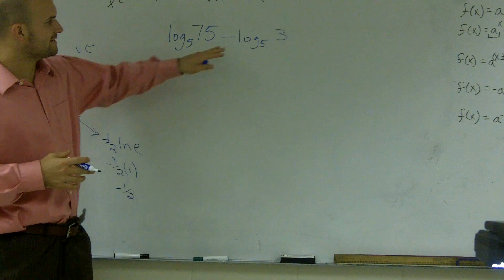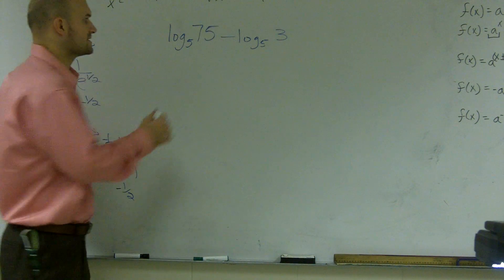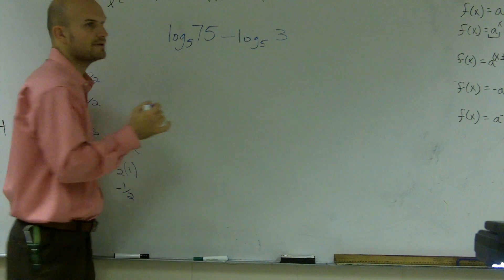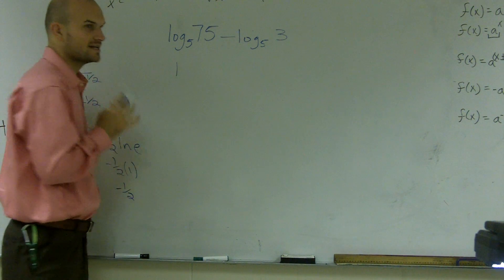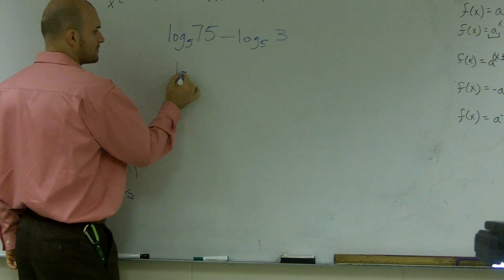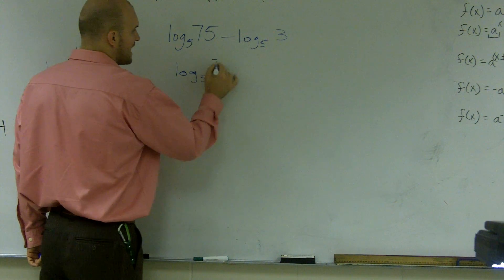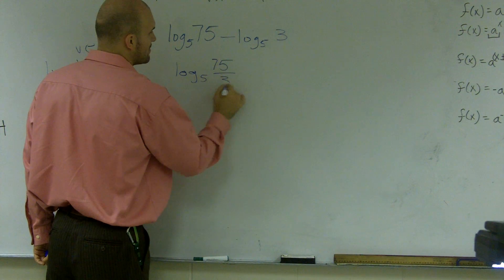What I can do is since I have subtraction and since my bases are the same, I can use my rule of subtraction logarithms and write this as, condense it into one single logarithm. So I can write it as log base 5 of 75 divided by 3.